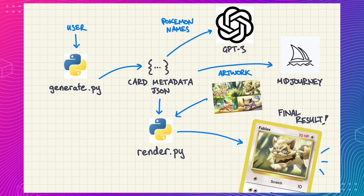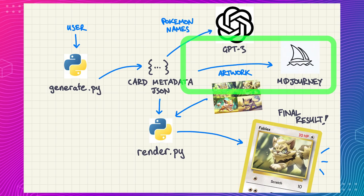That pretty much covers our process for generating a collection of Pokemon cards end to end. Our app design requires an OpenAI account to generate names and descriptions, and a Midjourney account on Discord for artwork. Unfortunately there is a manual step: interacting with Midjourney's Discord. Midjourney doesn't currently offer any public API, so we have to do it by hand. We could write a Python Selenium script to automate Discord, but Midjourney's terms and conditions discourage this. Until a public API is available, we'll have to manually generate the images.